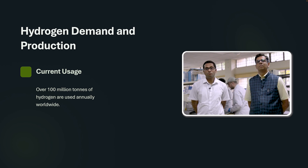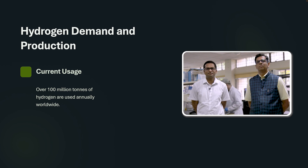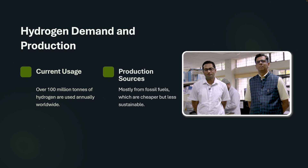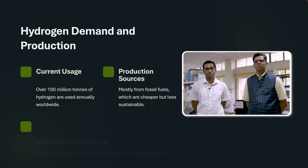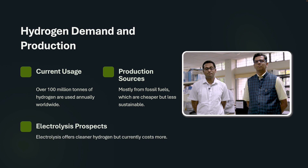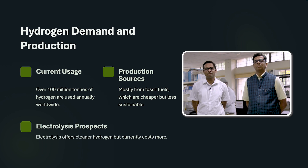But if we are producing so much hydrogen, are we using electrolysis? Not really — we are using a lot of fossil fuels for producing it, which happens to be really cheap compared to the electrolysis route. But why are we not using electrolysis? Because it is costlier, and this is what we are going to understand: how does the economics work behind production of hydrogen through electrolysis compared to that of fossil fuels.